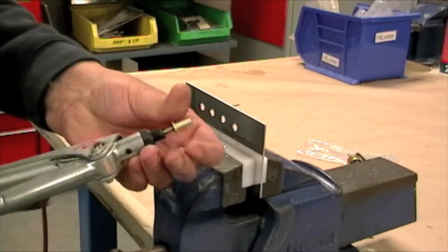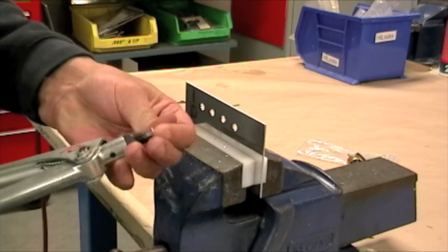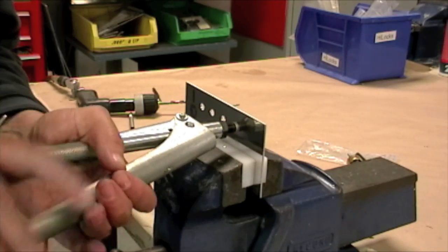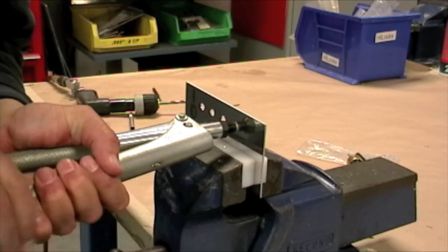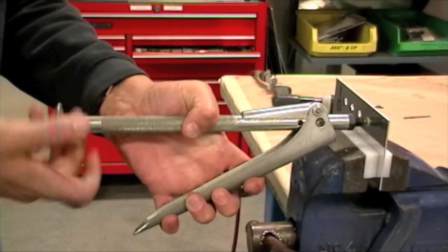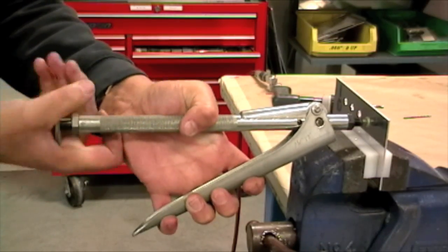Thread the rivnut on the tool. Use the installation tool to pull the rivnut. Remove the installation tool by twisting the knob at the back end.